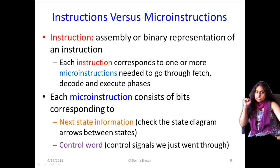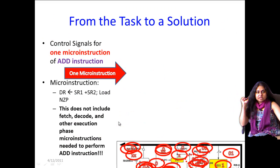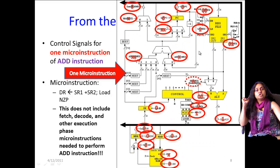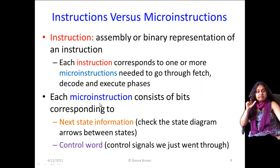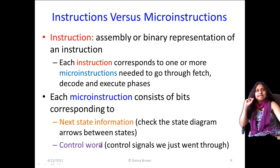Each micro instruction consists of information corresponding to two things: one is what is the next state of the hardware depending on what has been done in this state, and two is the control word. A state is a unique evaluation of all the control signals in the system. A control word is basically a concatenation of all the control signals.